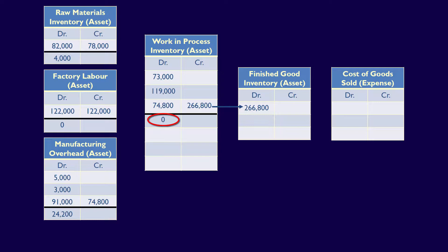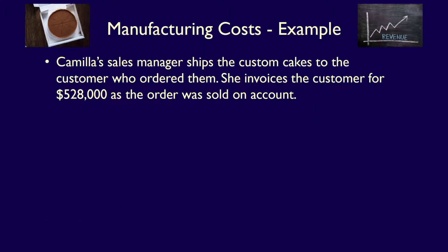The ending balance in the work-in-process inventory account is now zero, which makes sense — if we only manufacture custom products that are ordered and have no other jobs in process, work-in-process equals zero when the job is done and transferred out. We now have $266,800 in finished goods inventory, but that balance won't stay long because we're shipping the custom cakes out to our customer immediately. Since the product has now been sold and shipped out, we have to record the sales entry to the sales revenue account at the selling price.